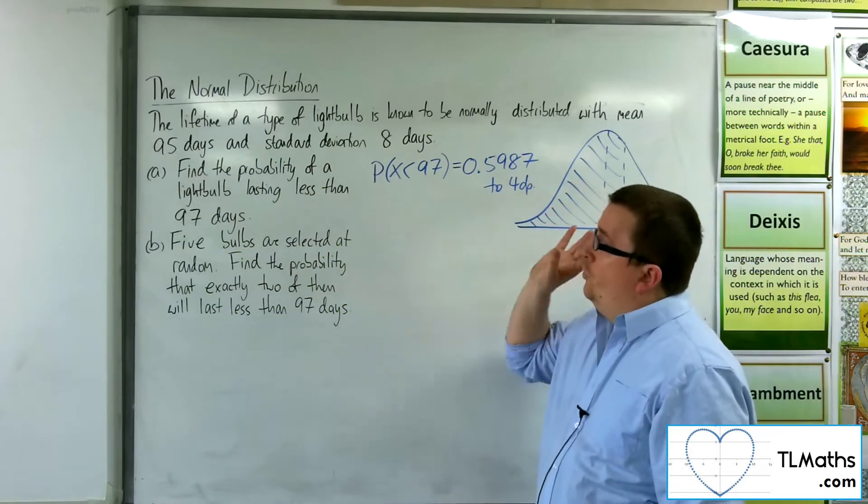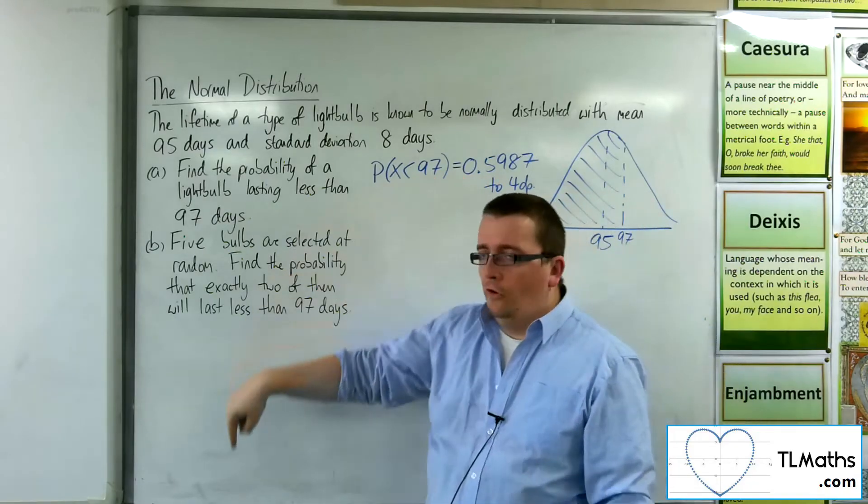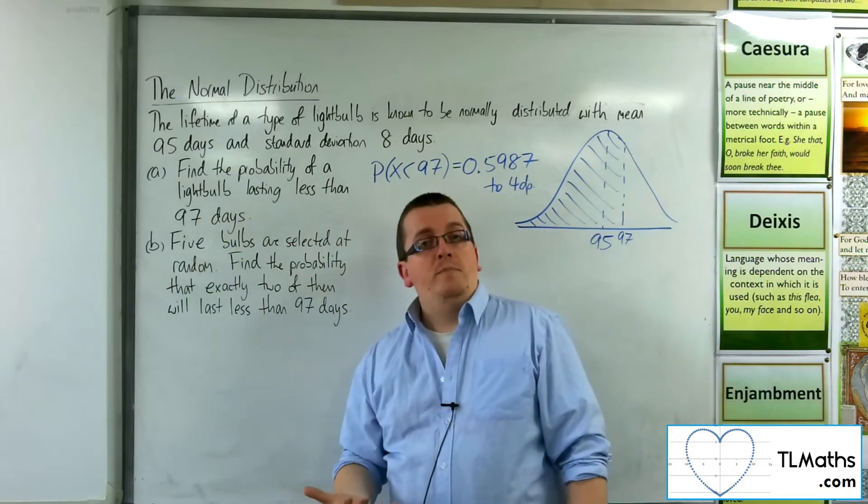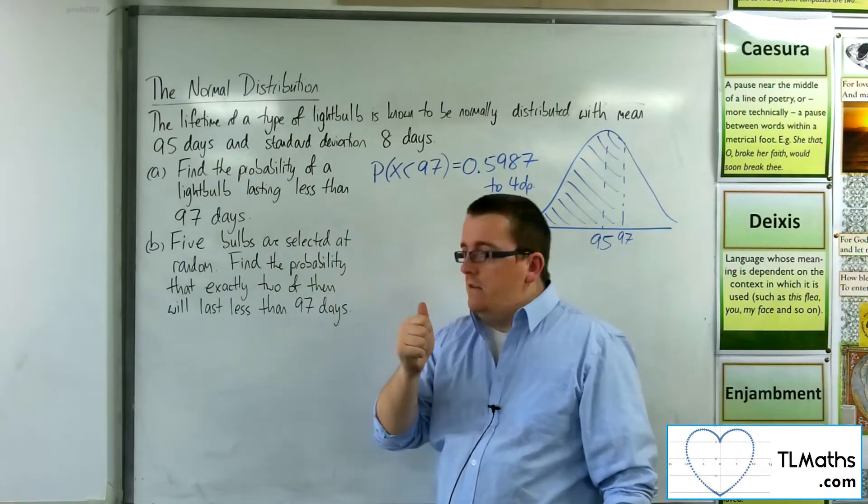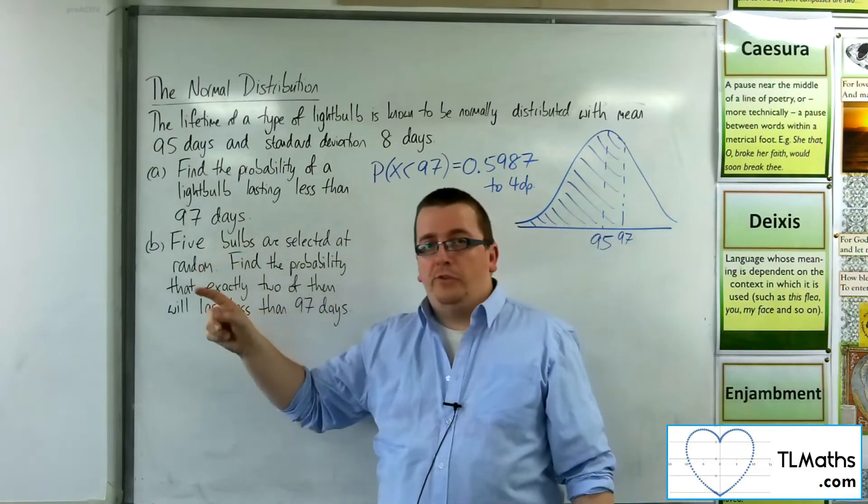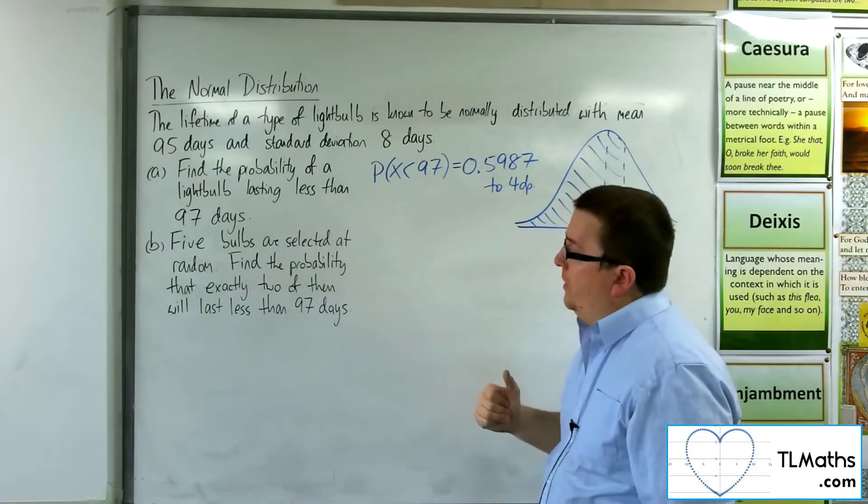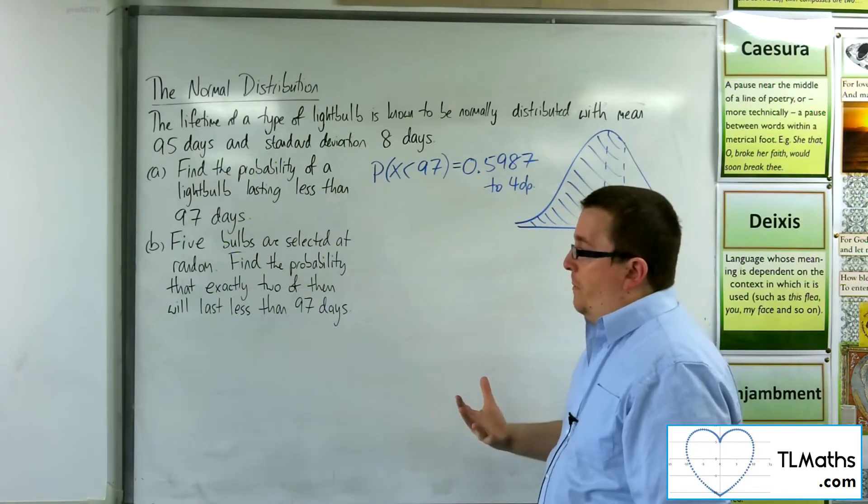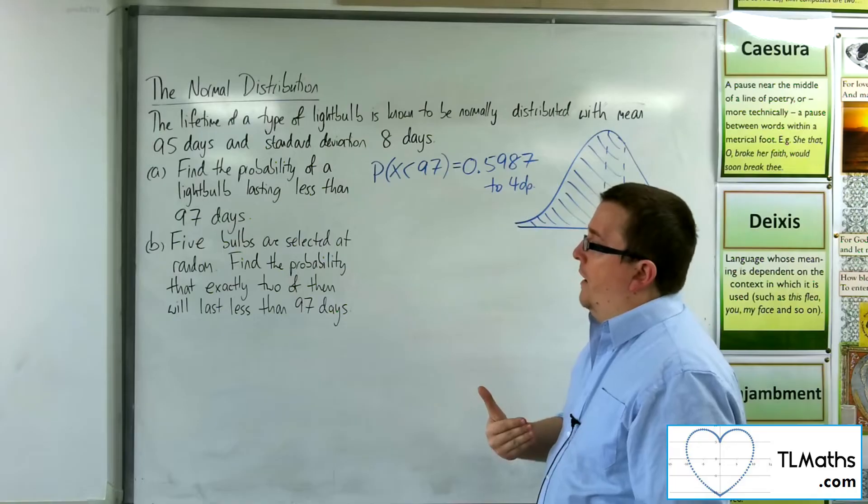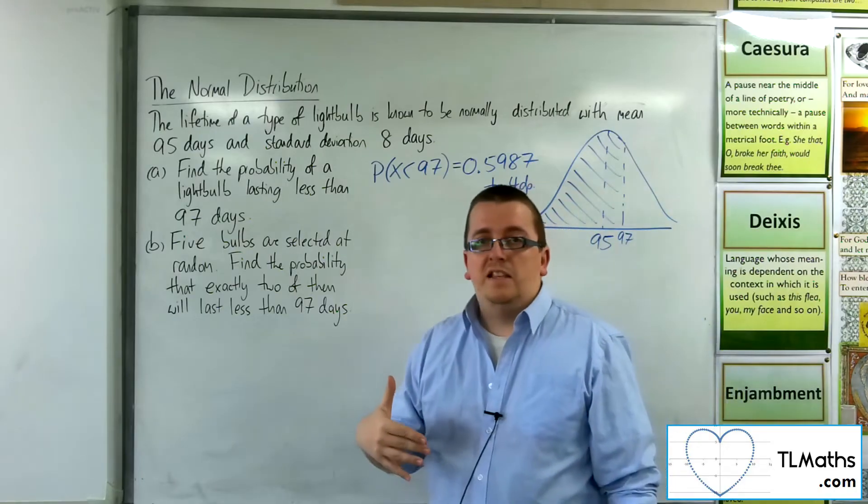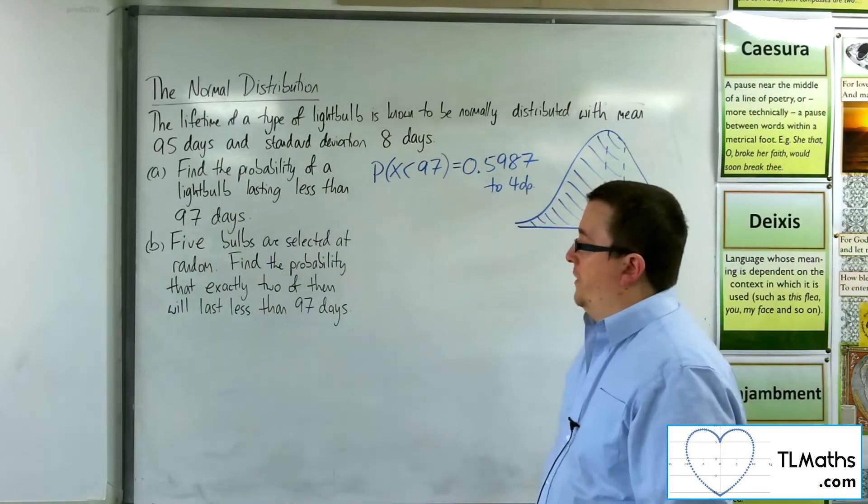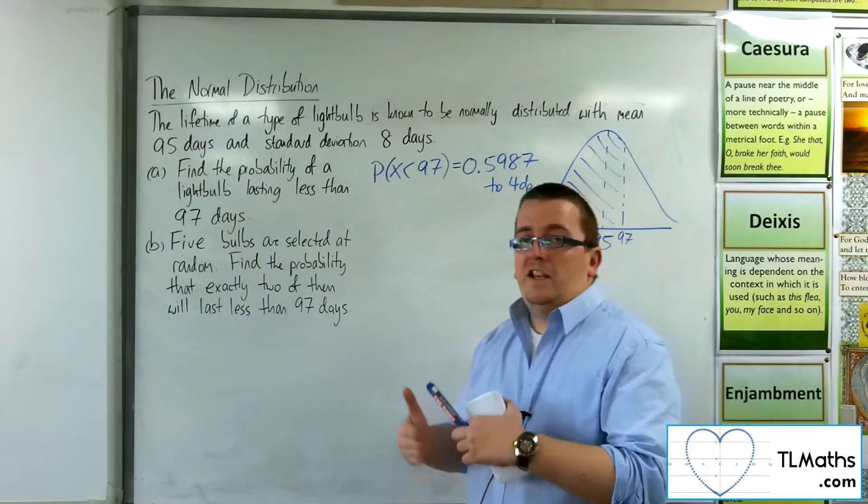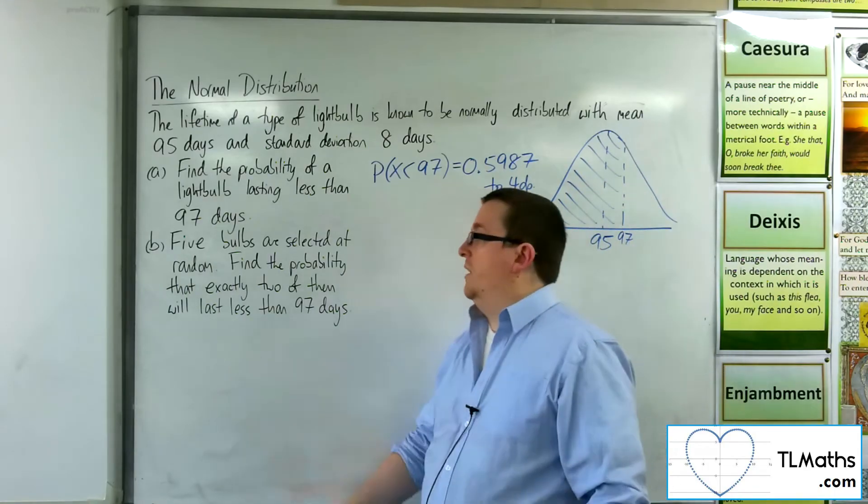So what has happened here is actually our normal distribution problem has now morphed into a binomial probability problem. Because we've got a certain fixed N, five bulbs, so five trials. We'd be assuming that the probability of one bulb lasting less than 97 days isn't going to affect the probability of another one lasting less than 97 days. And so we would be expecting these to be independent of one another.